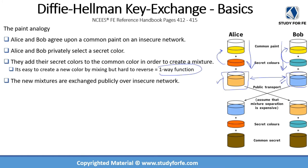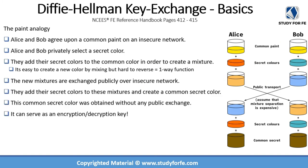Now that they have created these new mixtures, they will exchange them publicly over the insecure network. What has been exchanged publicly so far is the common paint and these new mixtures. Alice receives Bob's new mixture and Bob receives Alice's new mixture. Alice then adds her own secret color into Bob's new mixture, resulting in a third color — another new mixture. Similarly, when Bob adds his own secret color into Alice's new mixture, he also ends up with a third color.